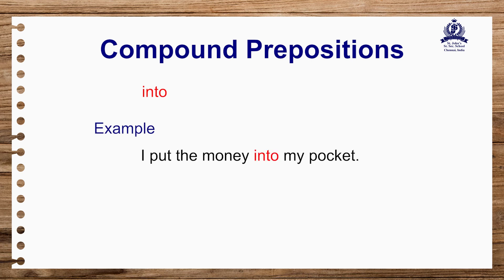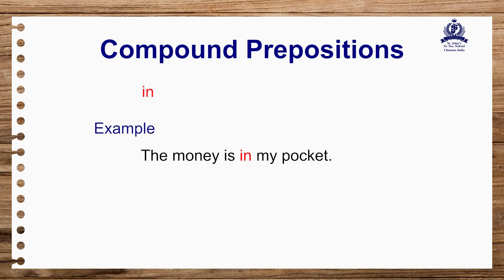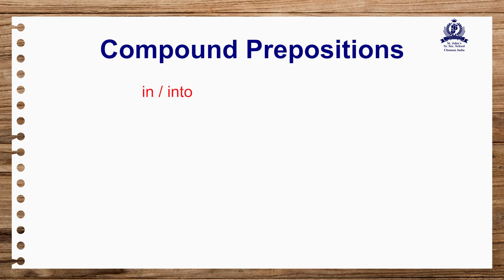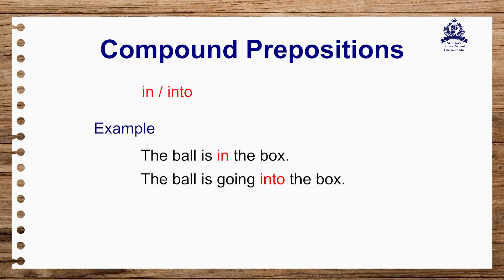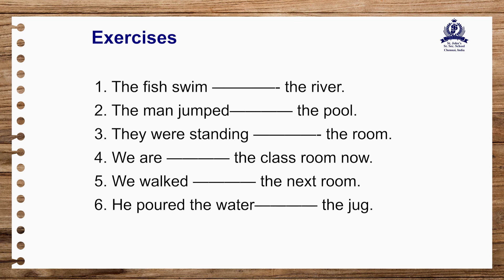When do we use 'into'? We use 'into' to show the movement of an object. For example: 'I put the money into my pocket.' Here, you are putting the money inside your pocket, so there is movement — that's why we use 'into'. But in the sentence 'The money is in my pocket,' the money is already inside the pocket with no movement, so we use 'in'. Another example: 'The ball is in the box' — no movement. 'The ball is going into the box' — there is movement.